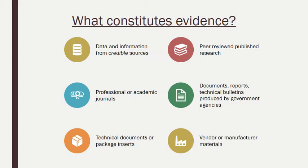Now that we have some background on what evidence-based practice is, let's talk about the evidence part — what is evidence, and what are some examples of reliable sources? Evidence is data and information on the intended topic that have been collected from credible sources. Examples of credible sources include peer-reviewed published research, usually published in a professional or academic journal. Also included are documents, reports, technical bulletins, or protocols produced by a government agency — CMS, CDC, the FDA, the Department of Health and Human Services. For laboratory professionals, technical documents or package inserts, as well as vendor or manufacturer materials are sometimes useful sources, though it is necessary to ensure that these documents are free of bias and opinions.